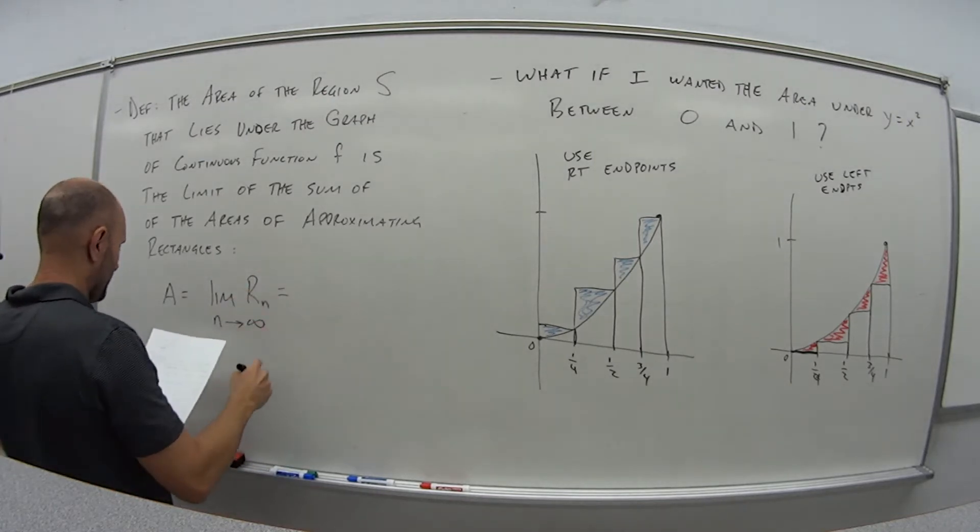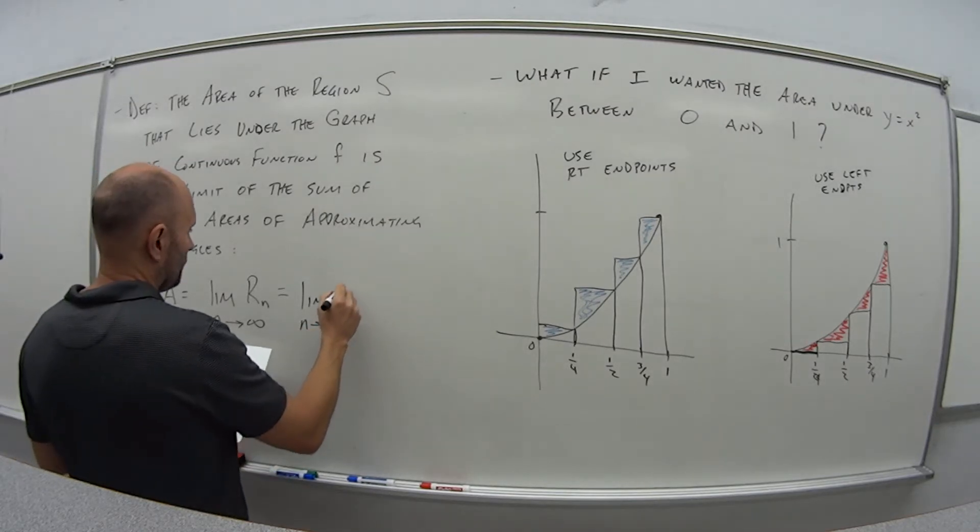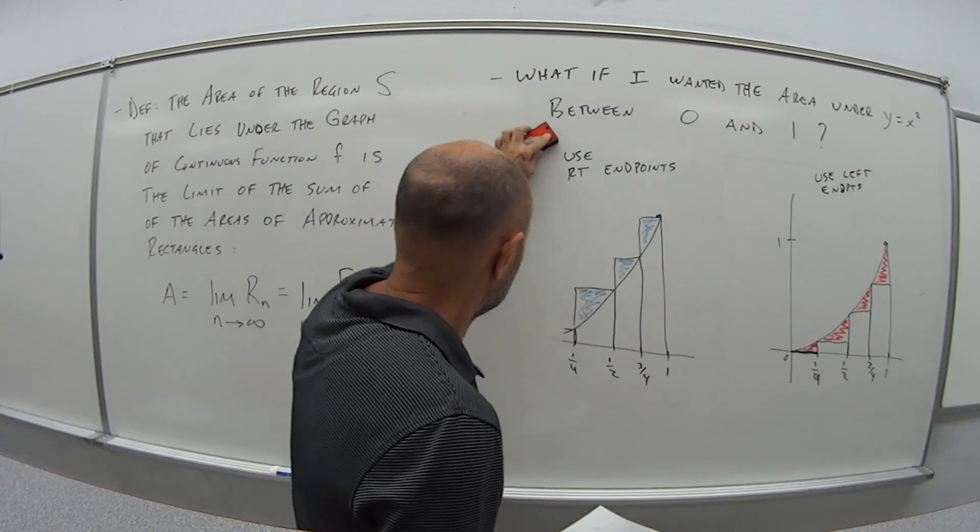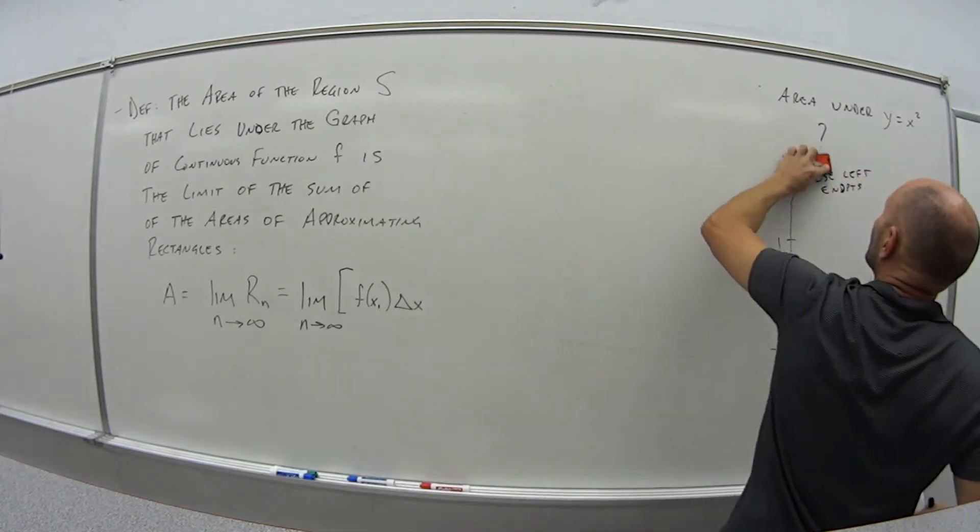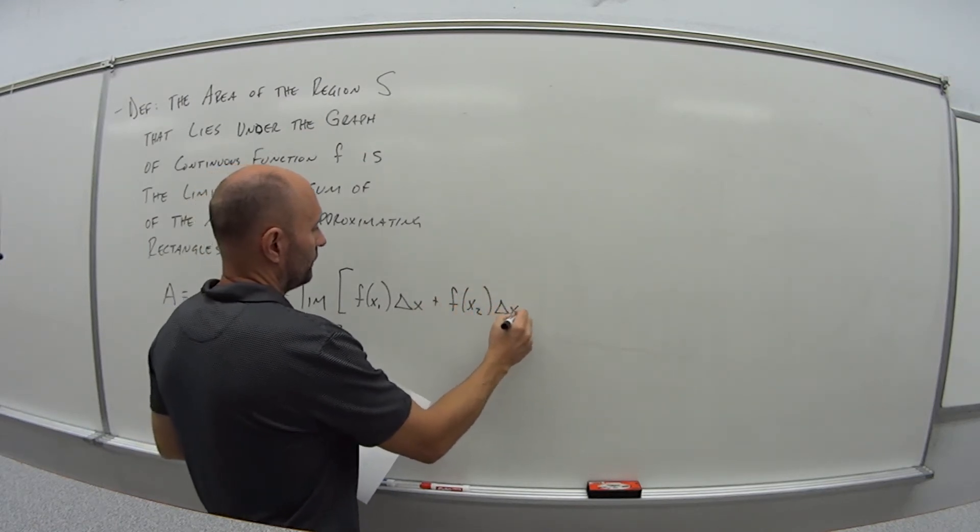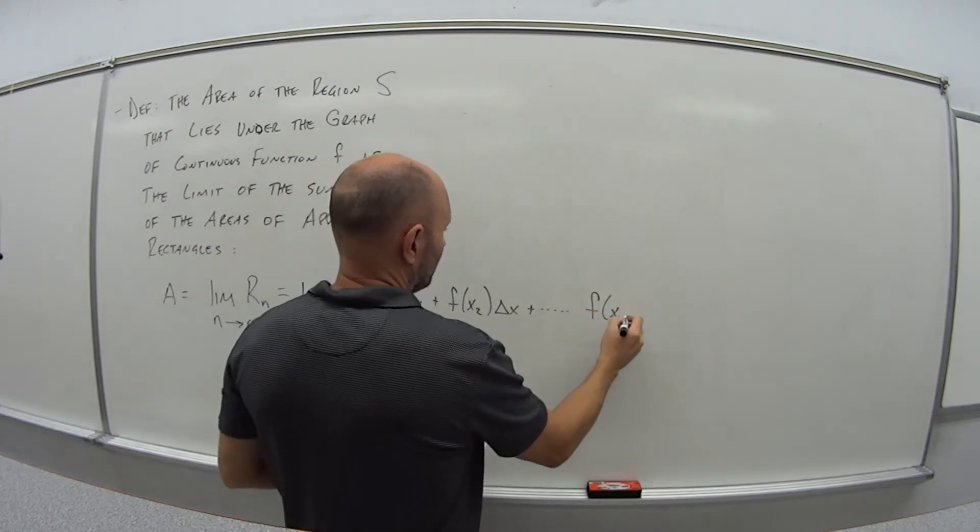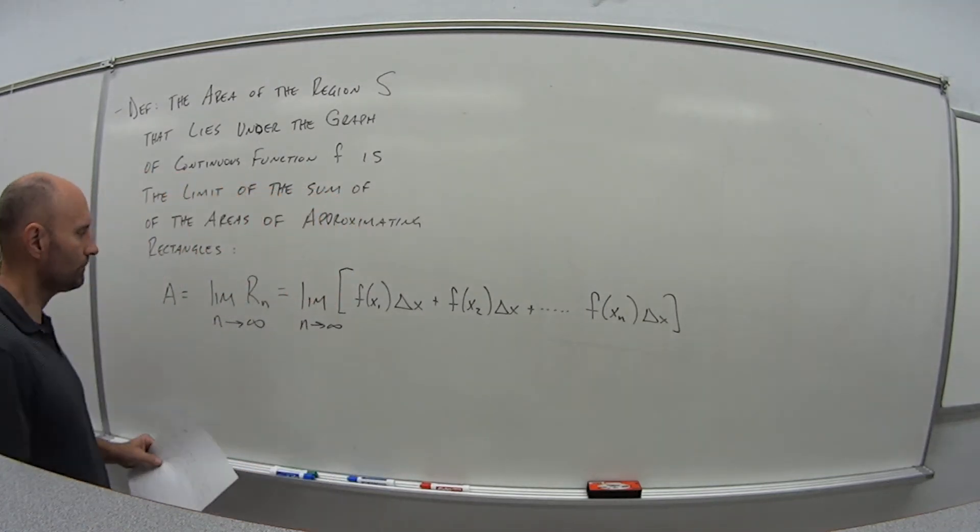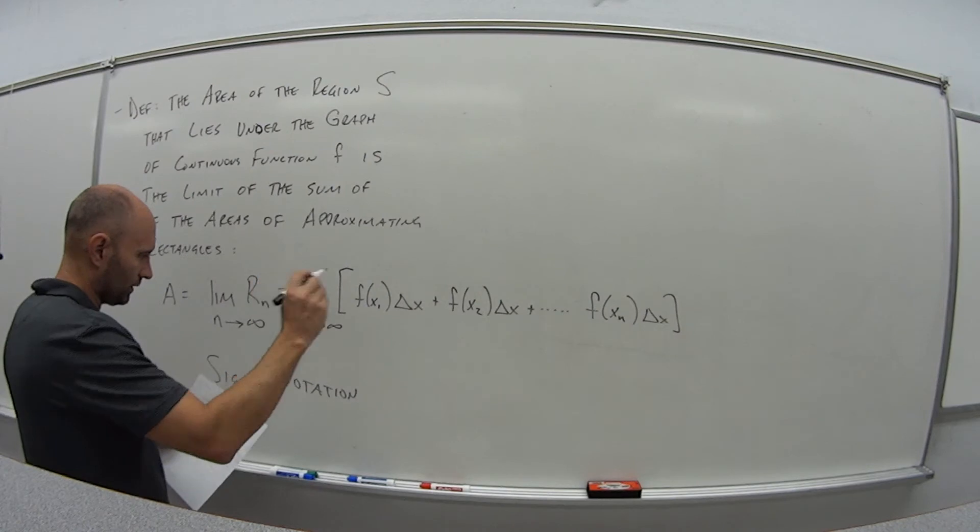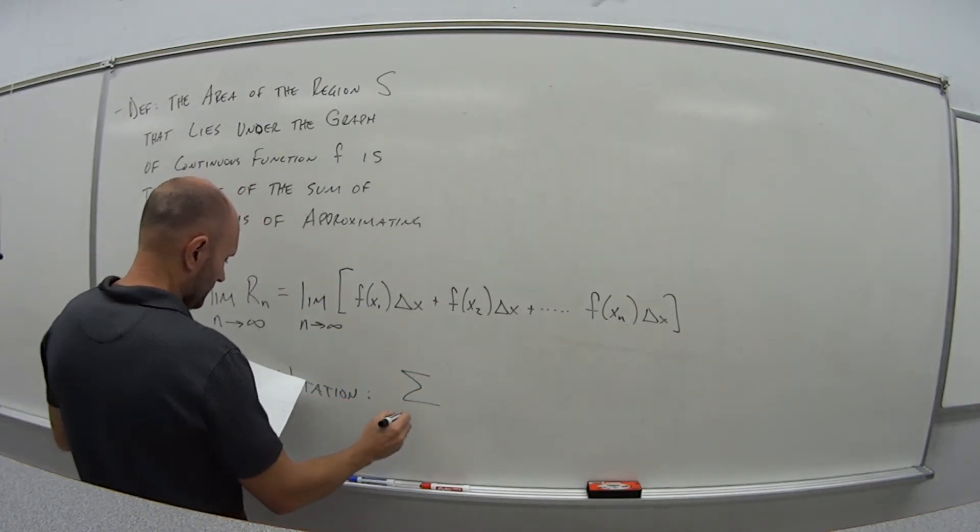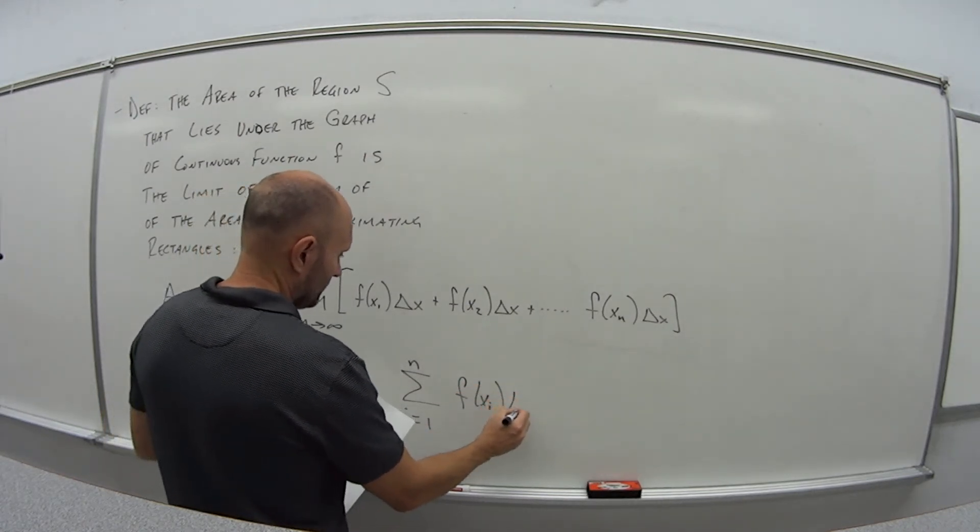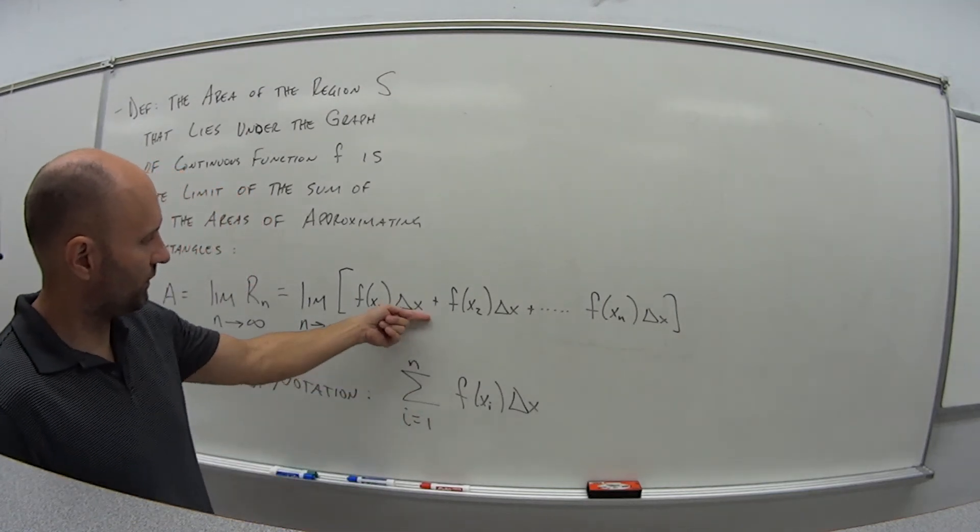And this is essentially this R_N, so we have the limit as N goes to infinity of F of X_1 times delta X plus F of X_2 times delta X plus so on and so forth until we get to X of N, and then delta X. You might also see this in sigma notation, sigma meaning sum, it's that sort of like crooked E. So the sum as I goes from 1 to N of F of X_I delta X, which again means the same thing as what we had up there.